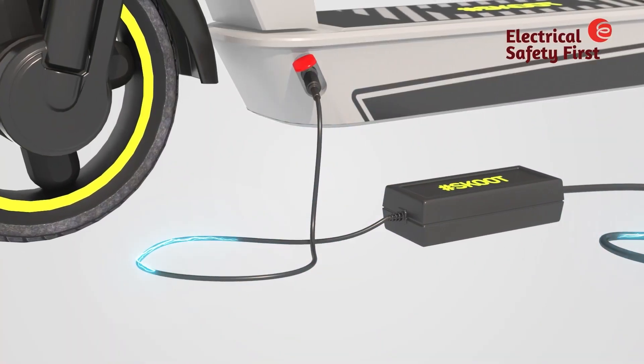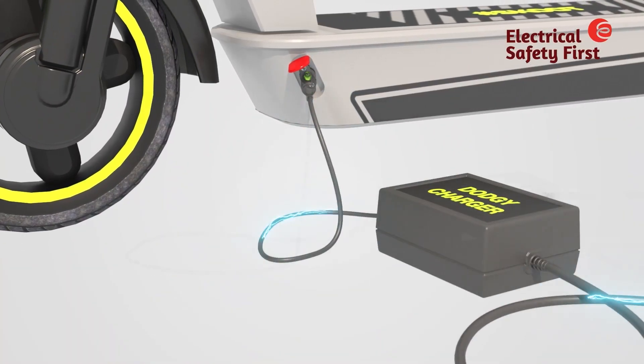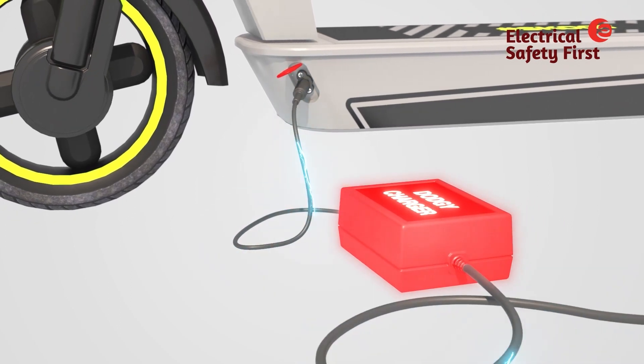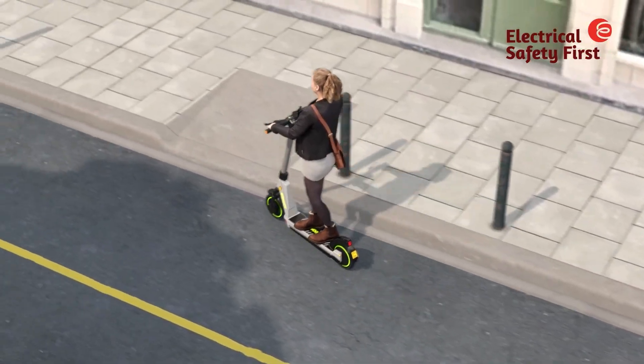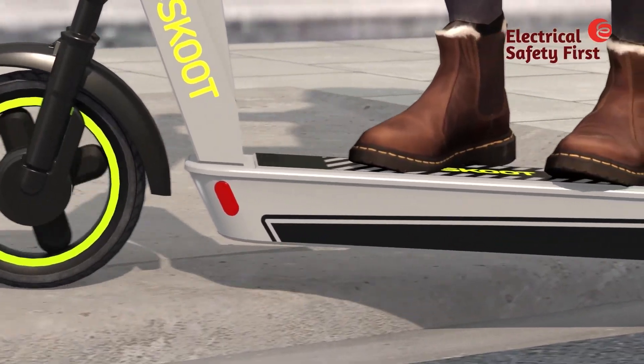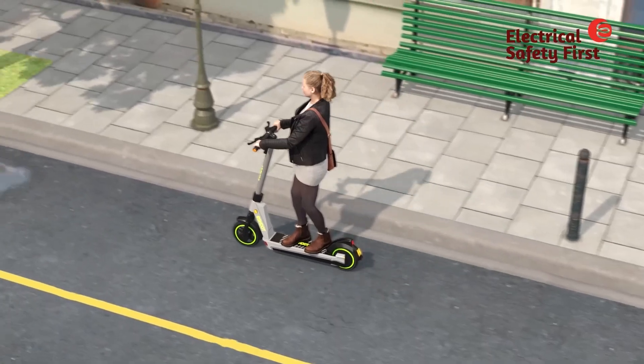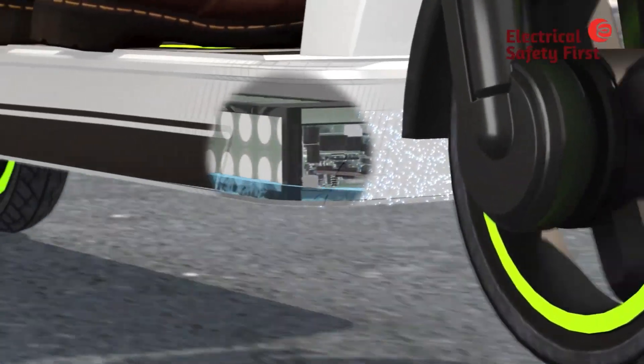Some examples of this misuse are overcharging, charging with an incompatible or non-compliant charger, damage caused by a harsh impact, or water entering the battery enclosure.